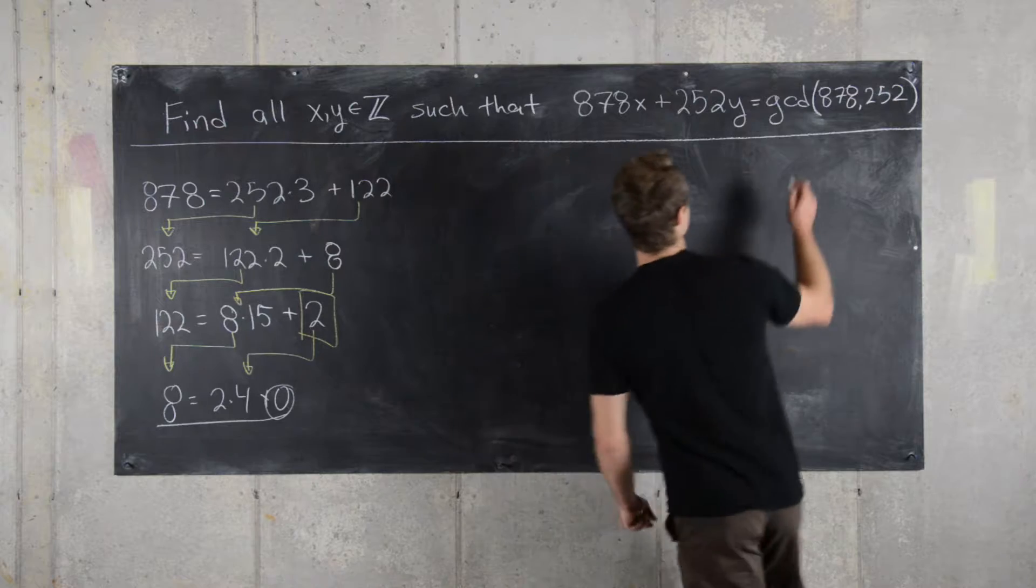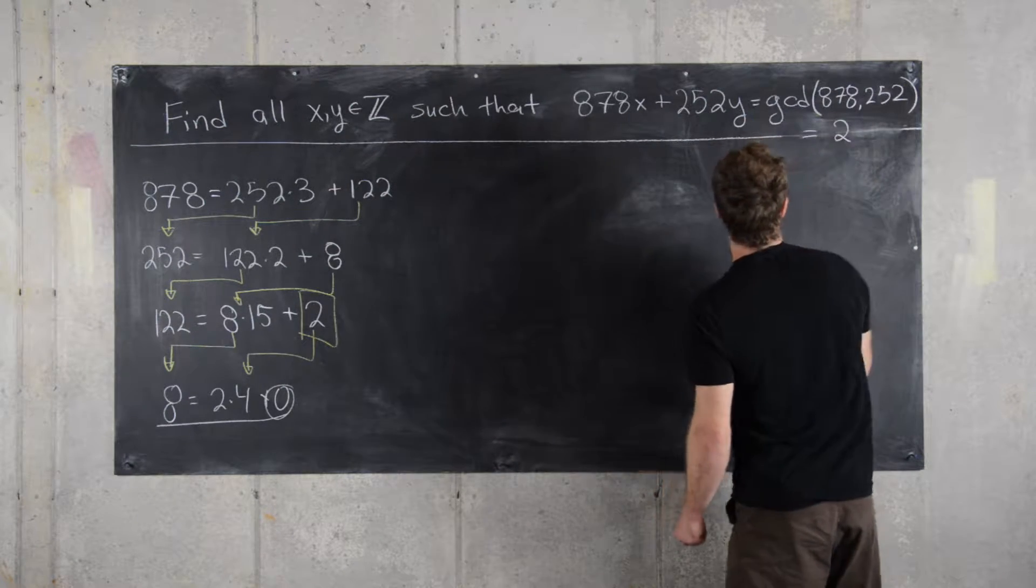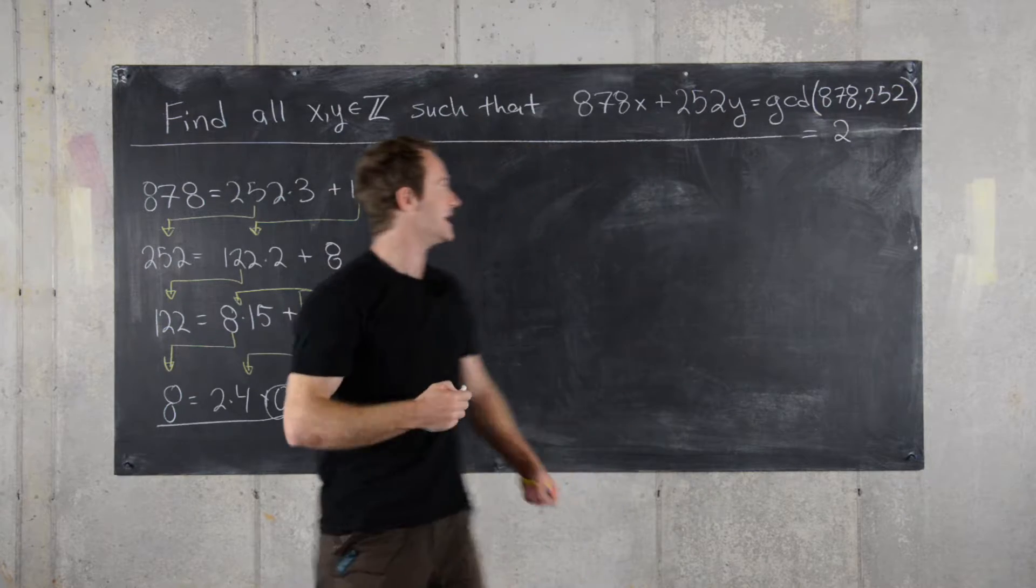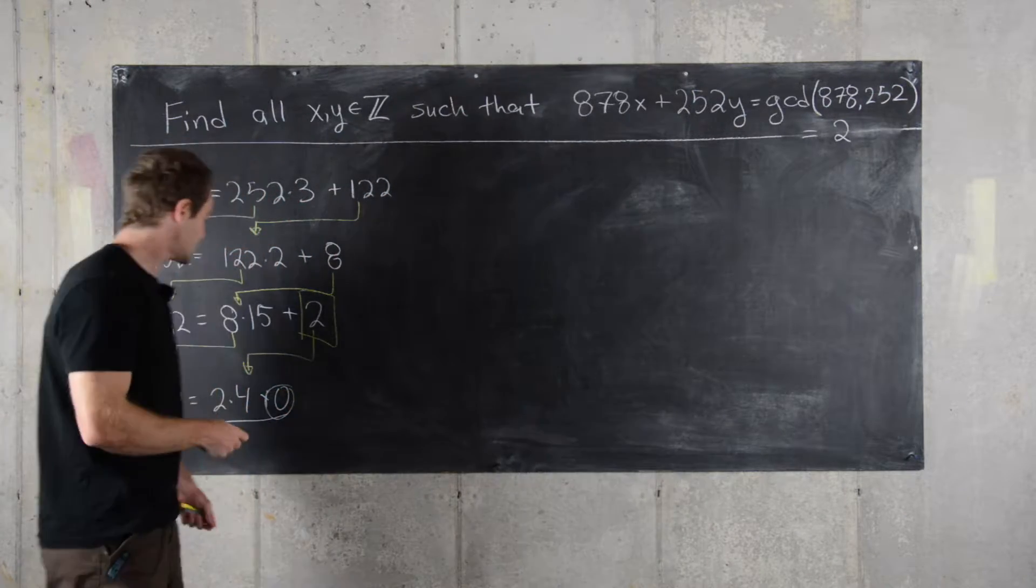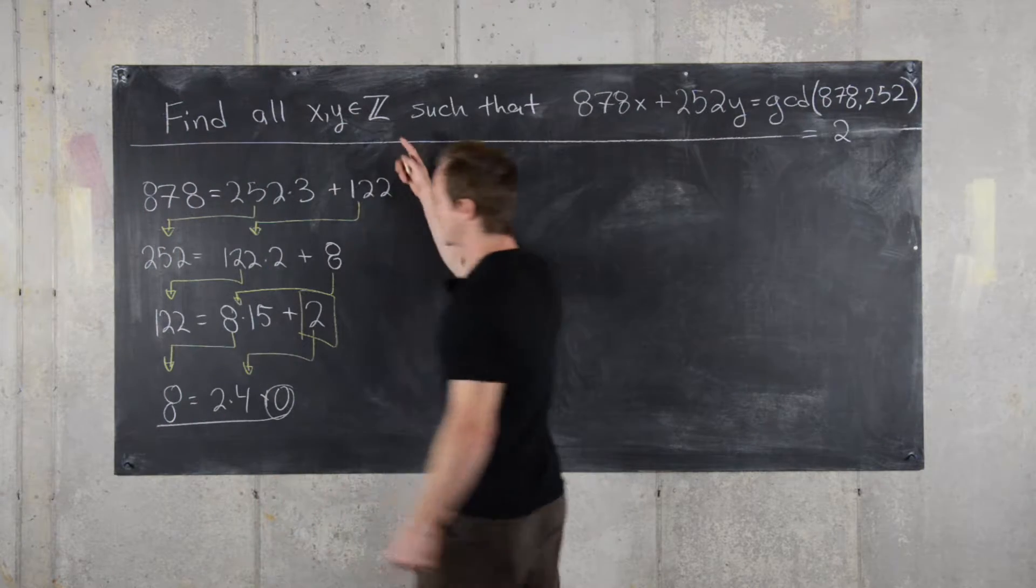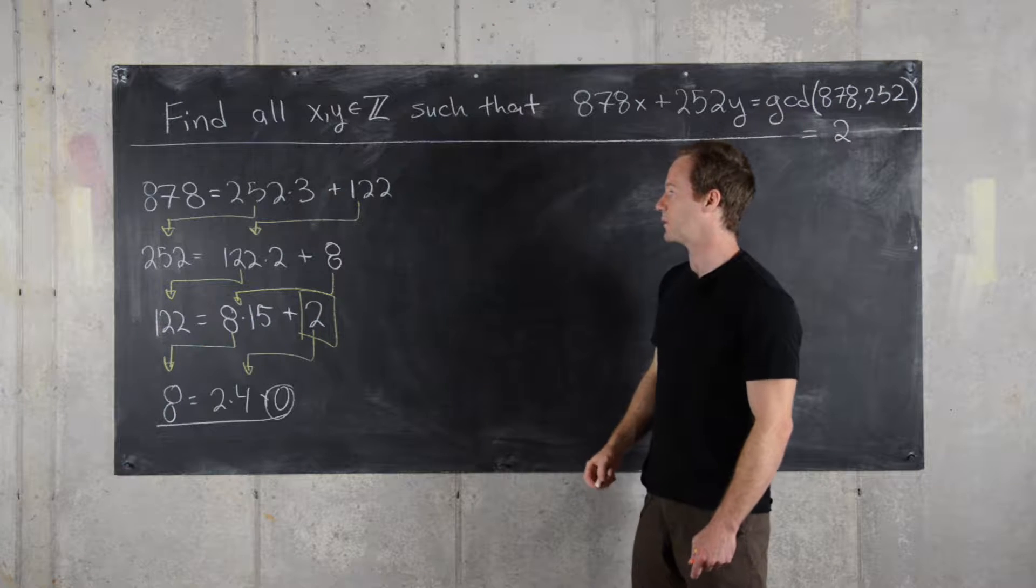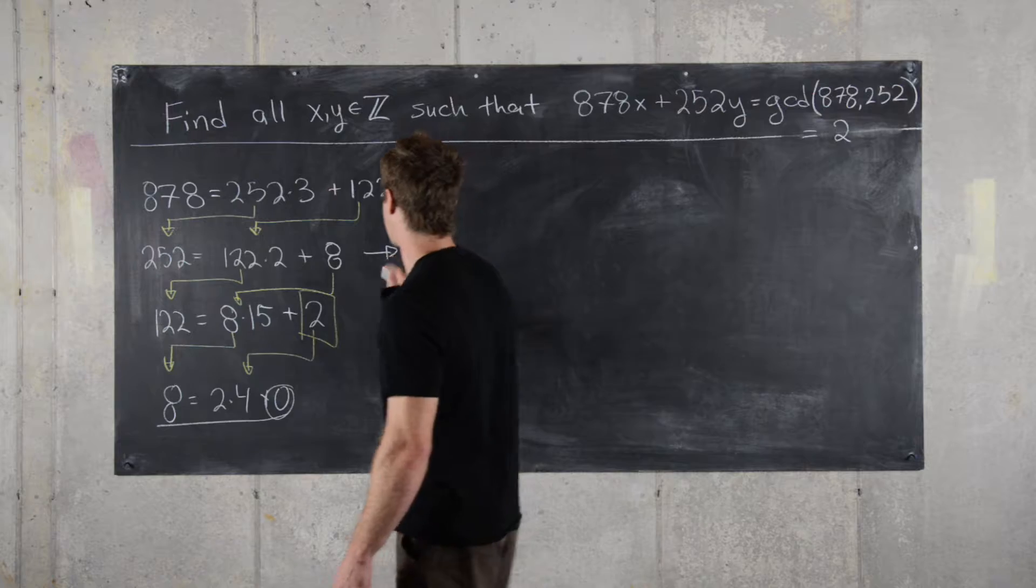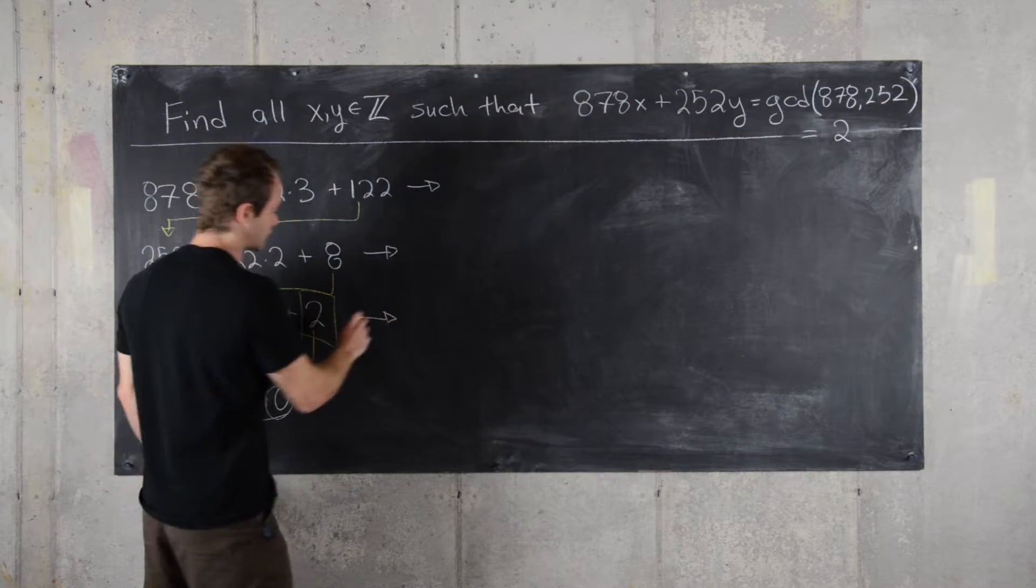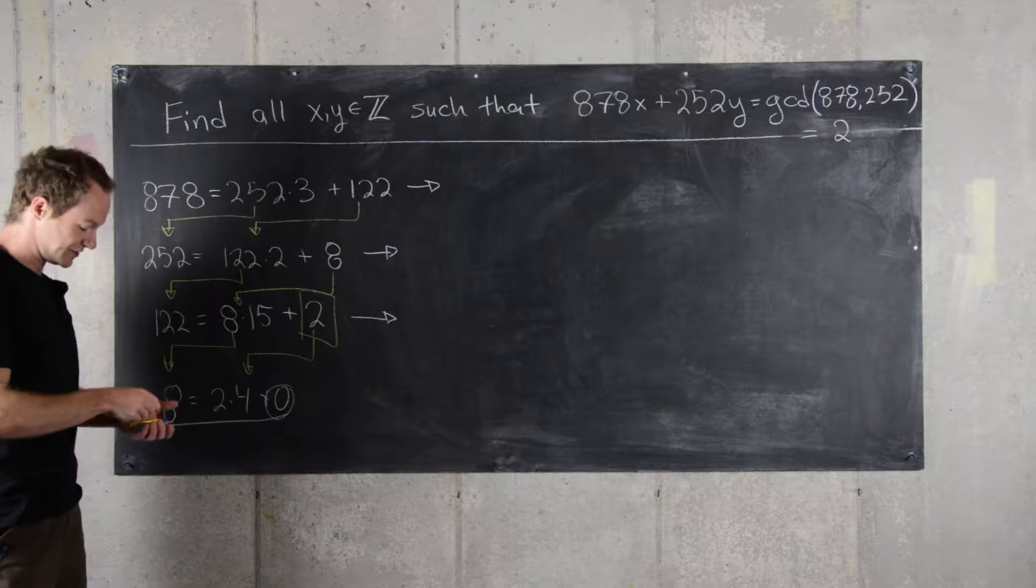So we can go ahead and insert here that we're actually looking to solve the equation 878x plus 252y equals 2. We've finished the Euclidean algorithm part of solving this problem. Next we want to rearrange each of these equations where we have solved for the remainder. I'll color code each of these.